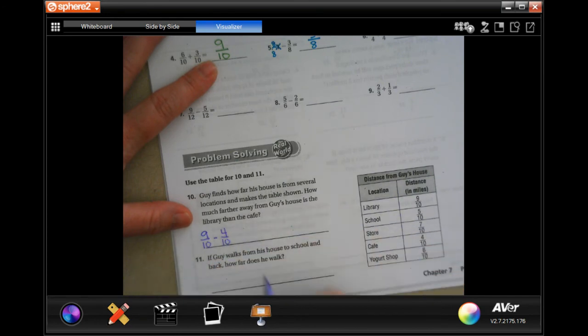Denominator stays the same. Nine minus four is five, and that's being measured in miles.